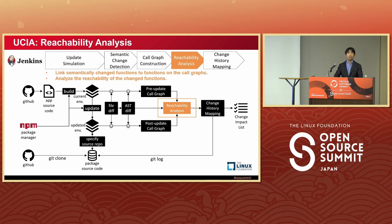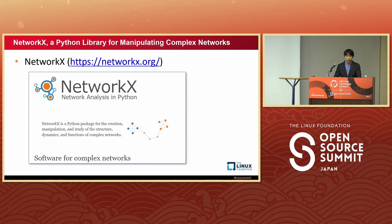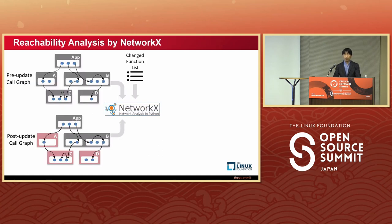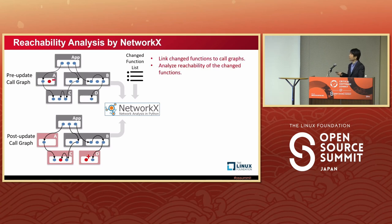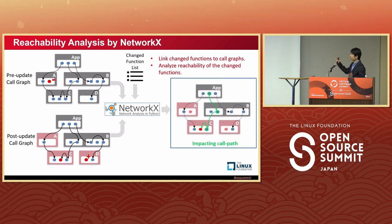The next stage is reachability analysis. We use NetworkX here. NetworkX is a famous Python library for manipulating complex networks. We already have a pre-update call graph, a post-update call graph, and the changed function list. We load the JSON files into NetworkX and link changed functions to the call graph. We then analyze reachability of the changed functions connected to the application, and NetworkX identifies the impacting call paths — shown in green.